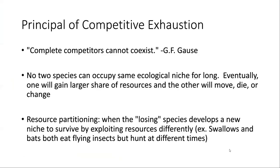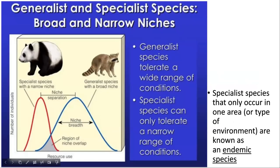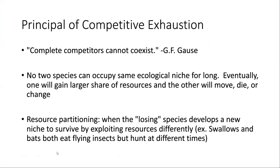Regarding actual competition — Gause, a Russian ecologist, stated that complete competitors cannot coexist. What that means is if any two organisms have overlapping niches, they're not going to be able to occupy the same space and same role, because eventually one will gain the upper hand and get the lion's share of resources. When that occurs, the second species will either have to move to a new location or find a new niche.